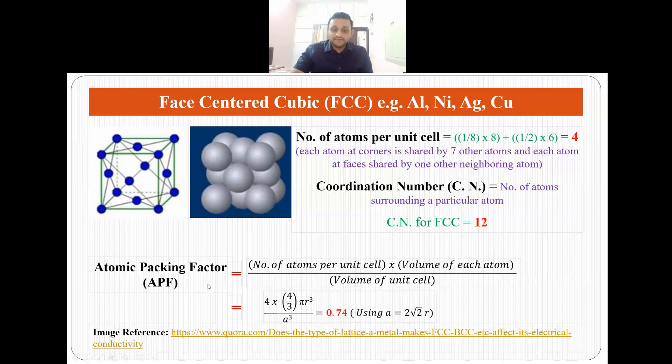The atomic packing factor, that is the number of atoms per unit cell times volume of each atom upon volume of unit cell is 0.74. Since there are 4 number of atoms present in unit cell, the volume is 4/3 pi r cubed and the value of a in FCC systems is 2 root 2 r. So if we put the value of a equals 2 root 2 r in this equation, we will get 0.74.